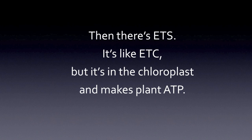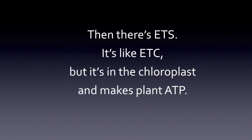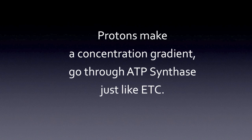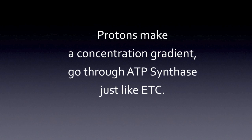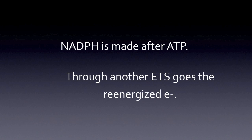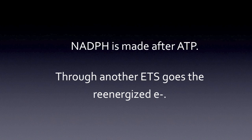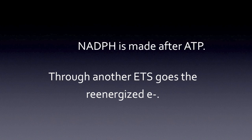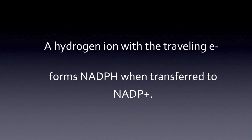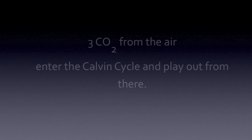ETS — it's like ETC, but it's in the chloroplast and makes plants ATP. Protons make a concentration gradient, go through ATP synthase, just like ETC. NADPH is made after ATP, through another ETS grows the re-energized electron; a hydrogen ion with the traveling electron forms NADPH, when transferred into NADP+.